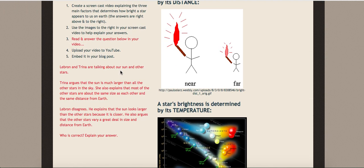LeBron and Trino are talking about our sun and other stars. Trino argues that the sun is larger than all the other stars in the sky. She also explains that most of the other stars are about the same size as each other and the same distance from Earth.